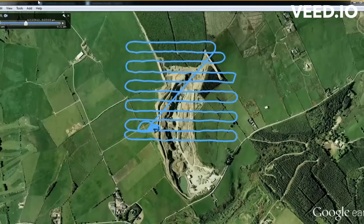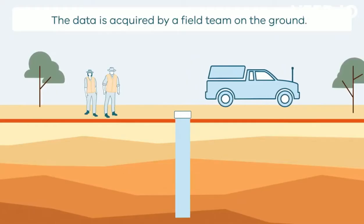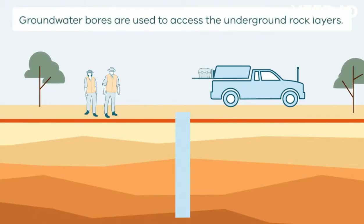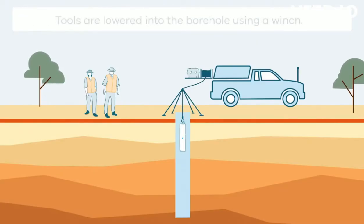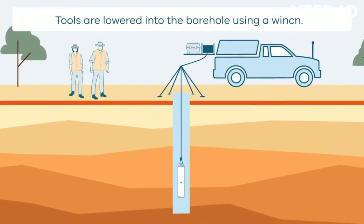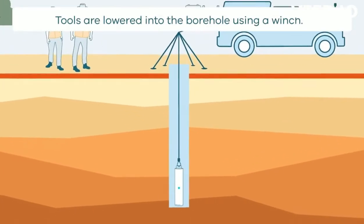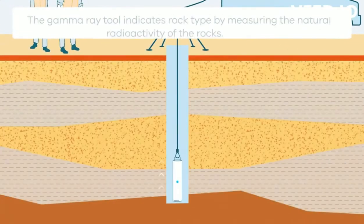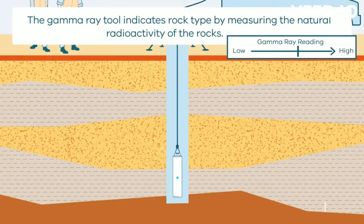A downhole survey is a geophysical survey that involves putting geophysical equipment down exploration drill holes to gather magnetic, radiometric, or electrical information from the rocks adjacent to the hole. It is also used to determine the exact path of the drill hole. Occasionally, tools with a small radiometric source may be used, and a detailed risk assessment is required to ensure the tool is not lost downhole.